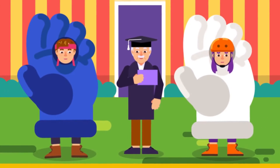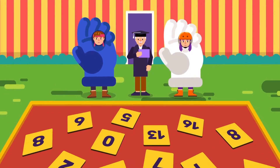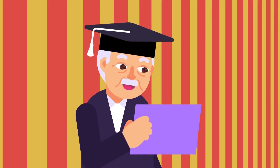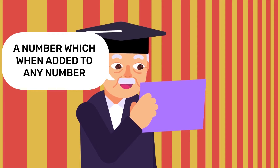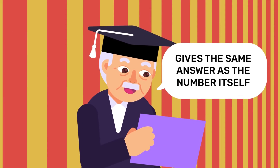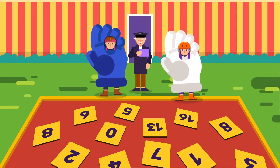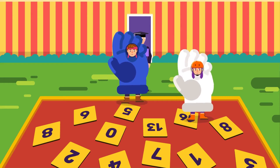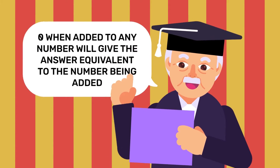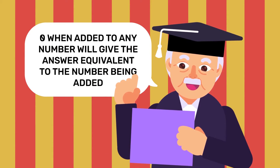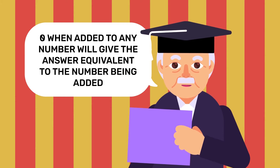3. Additive identity is very important. The additive identity is a number which, when added to any number, gives the same answer as the number itself. Therefore, the additive identity is 0, because 0 added to any number gives an answer equivalent to the number being added.